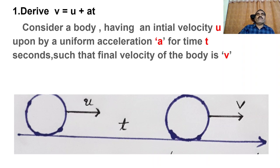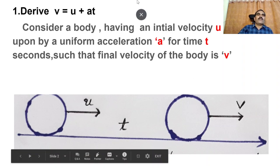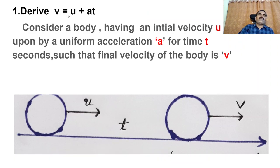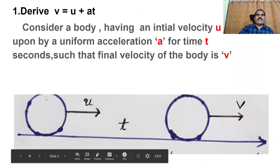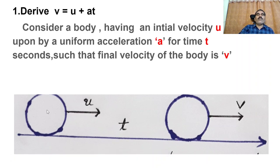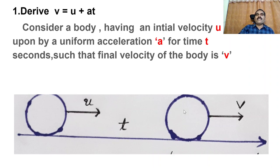The first equation of motion is V is equal to U plus AT. In order to derive this equation, consider a moving body A moving with an initial velocity U, acted upon by an acceleration A for time T seconds. Let V be the final velocity of the body.